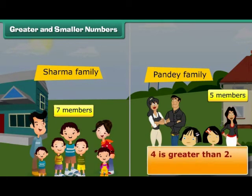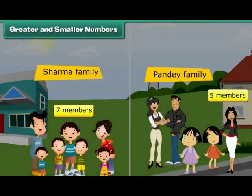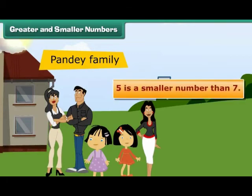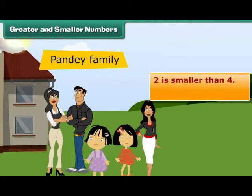For example, 4 is greater than 2, and 15 is greater than 10. Looking at this from the other side: Pandey family has fewer members, which means 5 is a smaller number than 7. Numbers that come before are smaller than the numbers that come later. So 2 is smaller than 4, and 10 is smaller than 15.